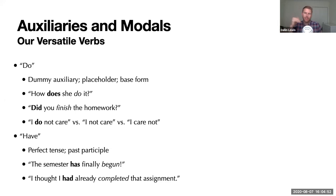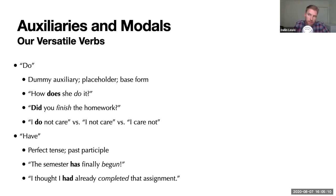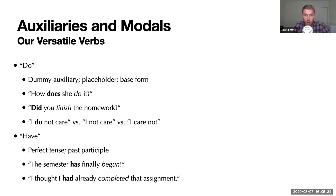Let's look at these more closely. Do is what we sometimes call a dummy auxiliary because it is really more of a placeholder and doesn't actually signify anything. There is the verb to do, and that's separate. But when we're talking about the auxiliary verb do, it doesn't really mean anything. We use it to turn regular sentences into questions — 'she does it' becomes 'how does she do it?' We also use it when we want to use 'not' between the subject and predicate: 'I do not care' is fine, but 'I not care' is not fine.